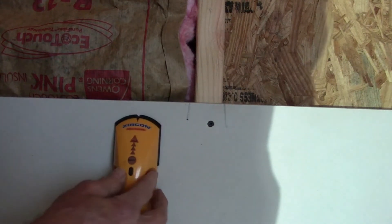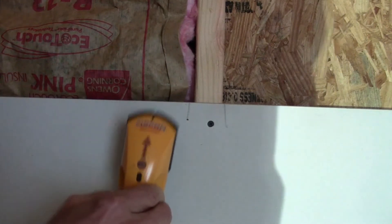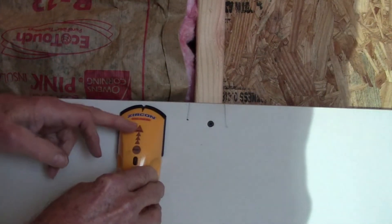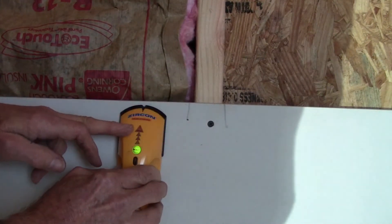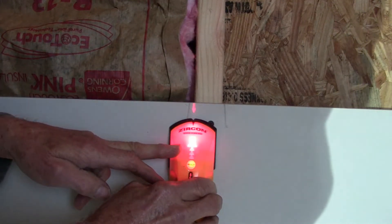Now if you've got insulation back here, this is going to be a little different. You've got to really push hard against this—push this hard against the wall so there's no space, and then work across until you find the stud.